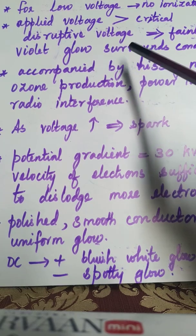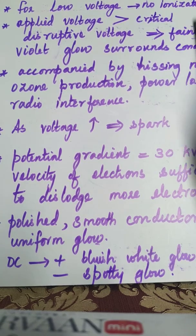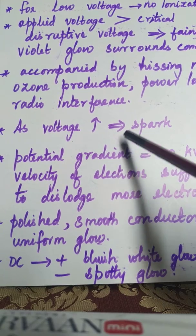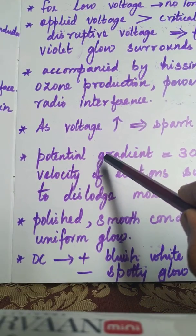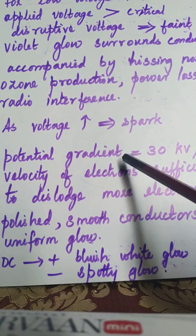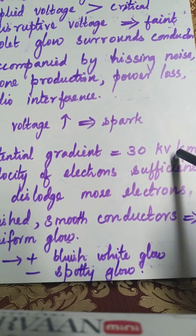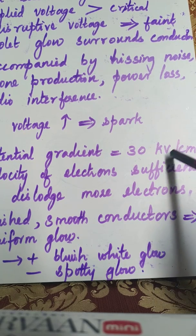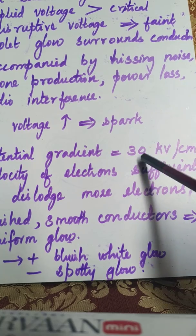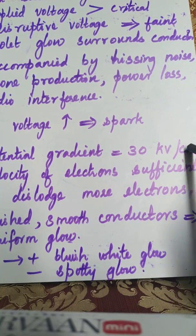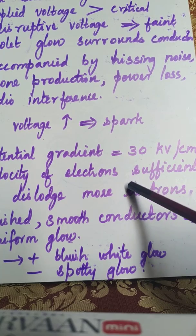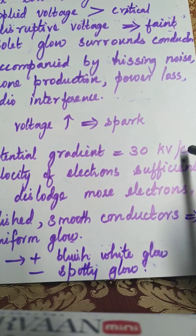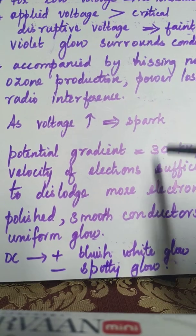For normal low voltage there will not be any ionization. When the applied voltage exceeds the critical disruptive voltage, corona occurs. The potential gradient at which corona occurs is 30 kilovolts per centimeter. When the potential gradient reaches approximately 30 kV/cm, the velocity acquired by the electrons will be sufficient to dislodge more and more electrons, leading to an electron avalanche, which in turn causes corona.